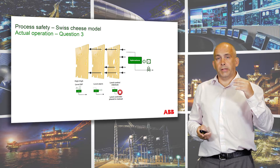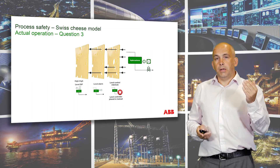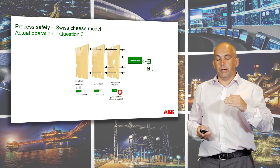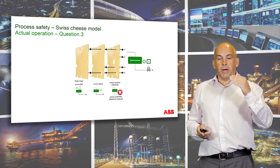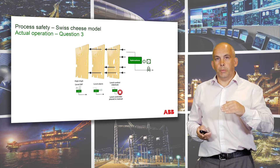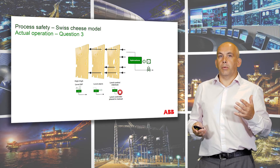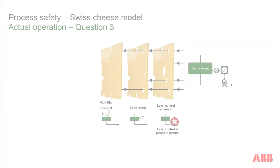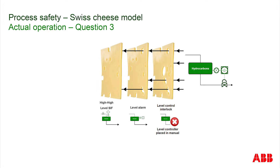The alarm annunciates, the operator accepts it, then the level goes back down again. The alarm activates again, the operator accepts it, it goes back down again. It becomes annoying for the operator, so he decides to mask that alarm until the level control gets resolved. As soon as the operator masks that alarm, we've made the second barrier ineffective — introducing another hole in that particular slice of cheese.